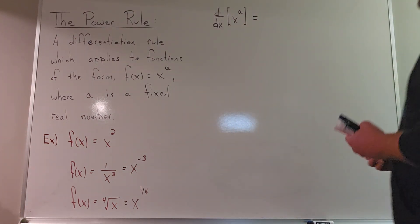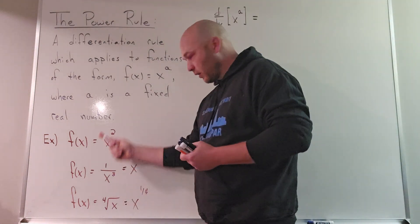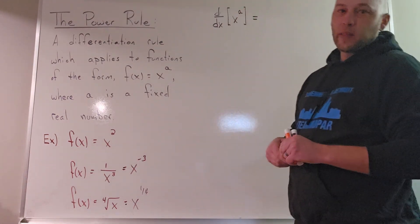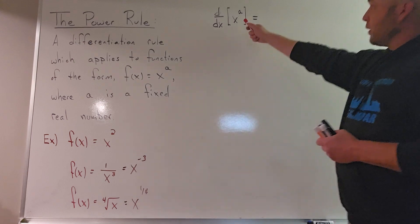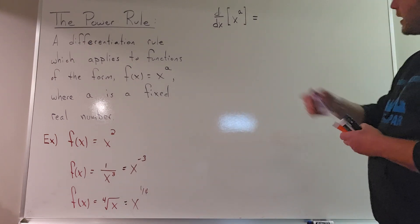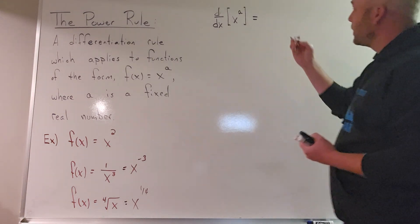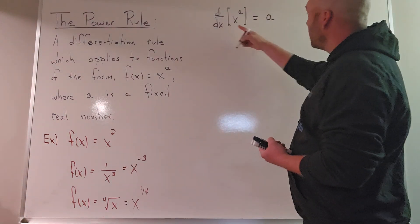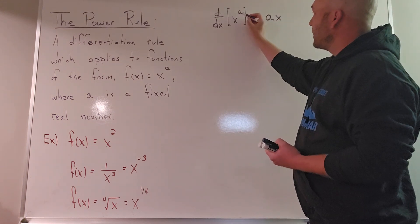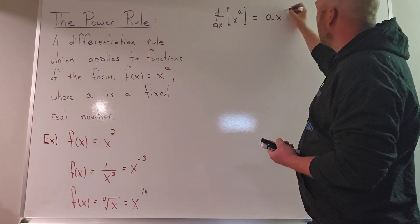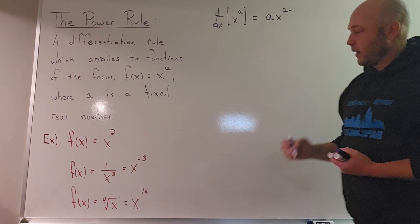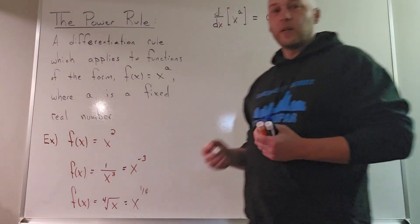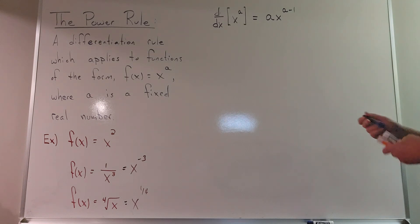Now let's look at the statement of the power rule, then we'll compute some derivatives, and following that we'll look at where it comes from. The derivative of x to the a works as follows: the exponent, which is a fixed real number, becomes the coefficient. The variable stays the same, and the exponent is reduced by 1, meaning the derivative of x to the a is ax to the a minus 1.